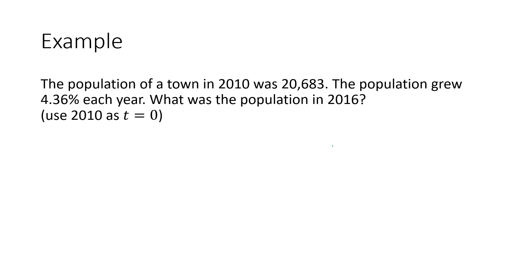So for example, if we've got a town in 2010 had a population of 20,683, and the population is growing 4.36% each year, we can make an equation and figure out what the population will be in 2016. And here's a nice little tip. We're going to say 2010 is the 0 point. So that means we started with 20,683.